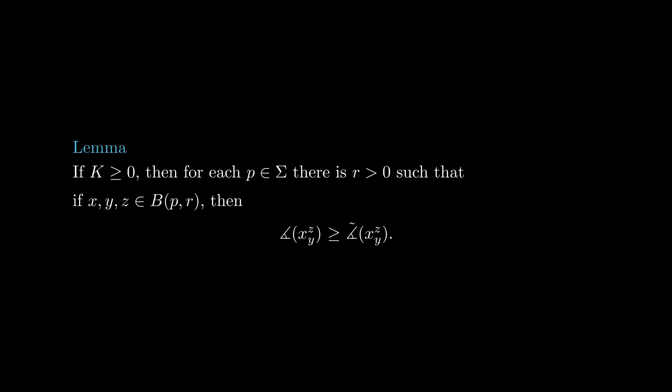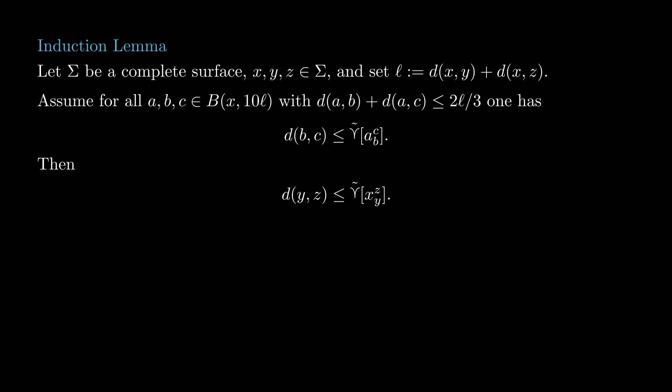The local version of Toponogov's theorem that we have proven is that for each p in sigma, there is an r for which the conclusion of the theorem holds for all triangles in the ball of radius r around p. Now we prove an induction lemma that will turn the local result into a global result. The proof we present here is by Urs Lang and Viktor Schroeder, which is a simplification of the one by Konrad Plott. The induction lemma is as follows: take a triangle x, y, z in a complete surface, set L as xy plus xz, and assume that for all triangles a, b, c in the ball of radius 10L around x such that ab plus ac is at most two-thirds of L, the side bc is not longer than the comparison side bc.